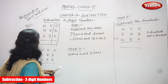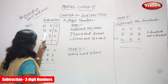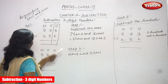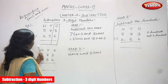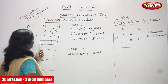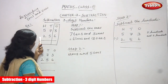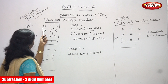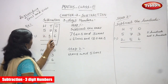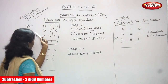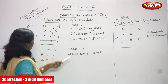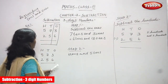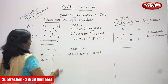First we have to see the sum. It is 573 minus 256. So I have to subtract 256 from 573. Under the 10s and 1s, we have to write the place value first, then write the number according to the place value.